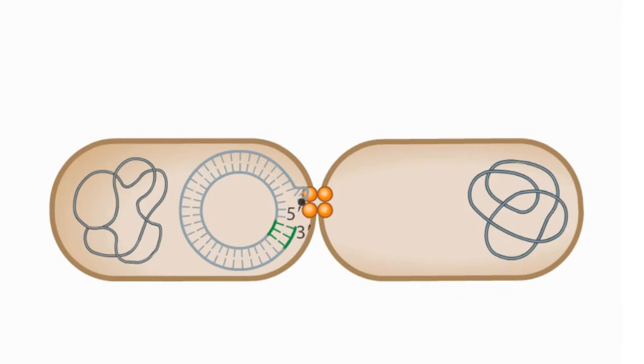The nick produces a 5' end and a 3' end on one of the DNA strands.